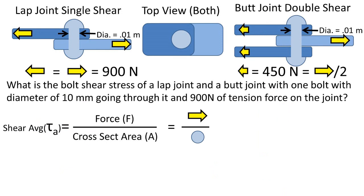We will start by finding the shear stress of the bolt of the lap joint. The shear stress formula for a lap joint is force over the cross-sectional area of the bolt. So after we plug in our force of 900 newtons and the area of the bolt of 0.01 meters squared times pi over 4, we get an answer of 11.45 megapascals.